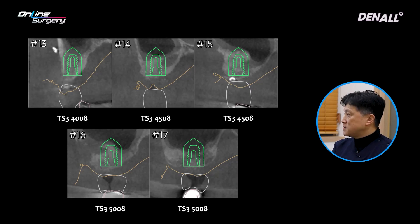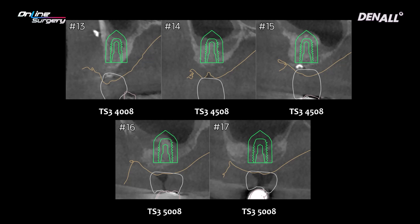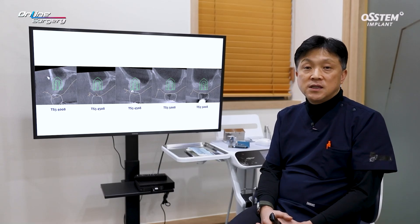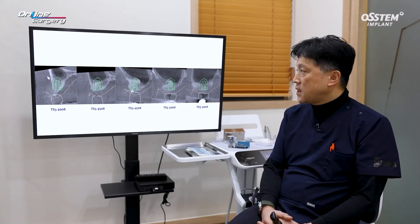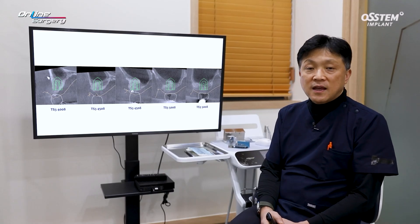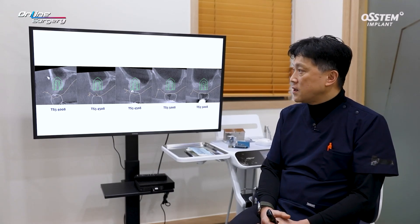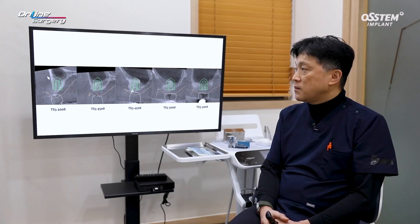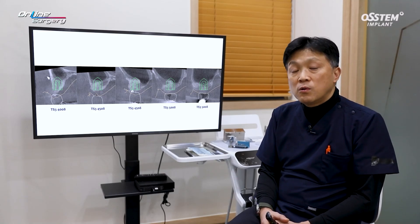When placing three of the implants, it was necessary to elevate the sinus membrane. Therefore, a surgical guide was used in placing these implants. The surgery itself was very simple and quick because the surgical guide was used. Further bone grafting was not done, so the surgery was performed flapless.